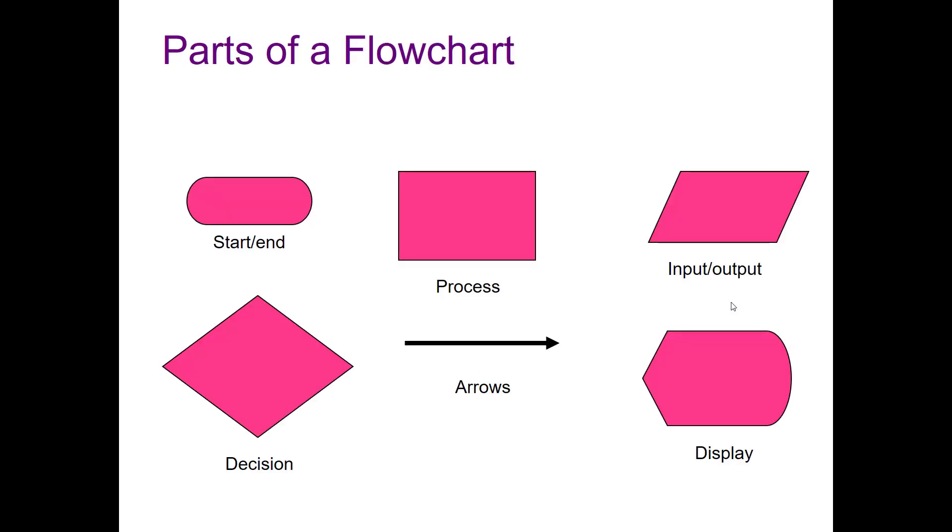So starting off, we've got the different parts of the flowchart. We've got a start and end, a process block, input and output block, decision block, arrows, and then a display block.